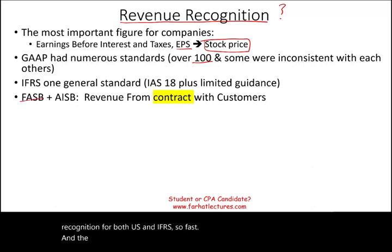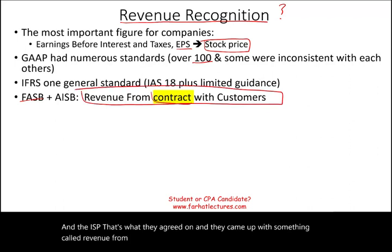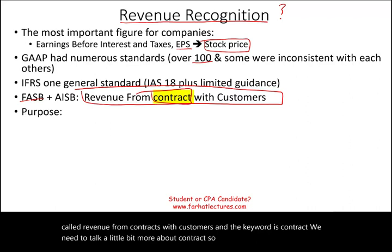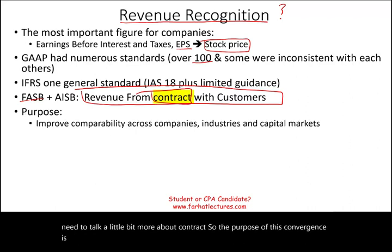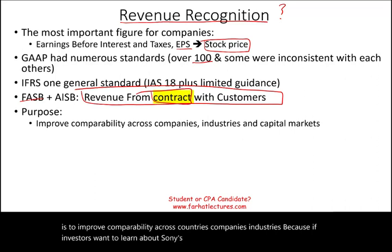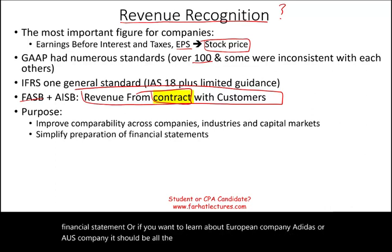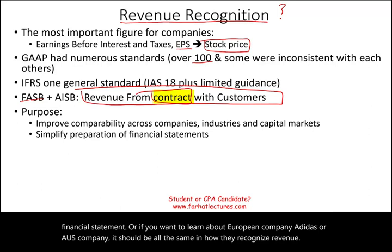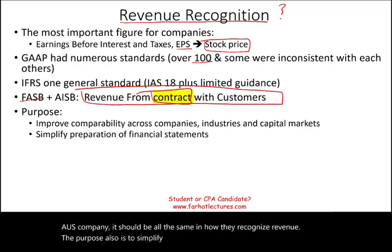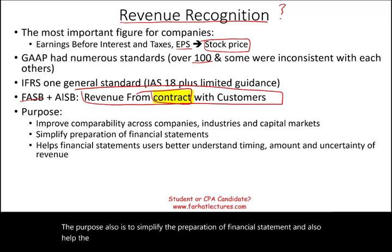FASB and the IASB agreed on this and came up with something called Revenue from Contracts with Customers — and the key word is contract. The purpose of this convergence is to improve comparability across countries, companies, and industries. If investors want to learn about Sony's revenue, or compare a European company like Adidas with a U.S. company, it should all work the same way in how they recognize revenue.